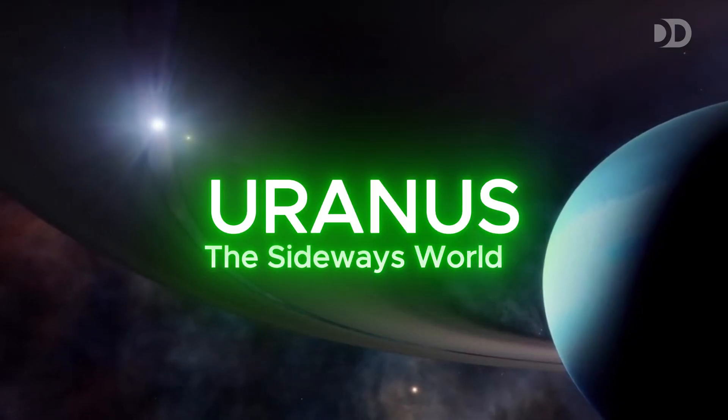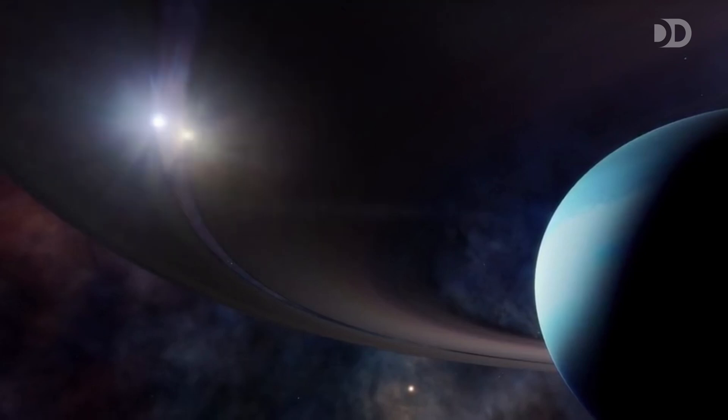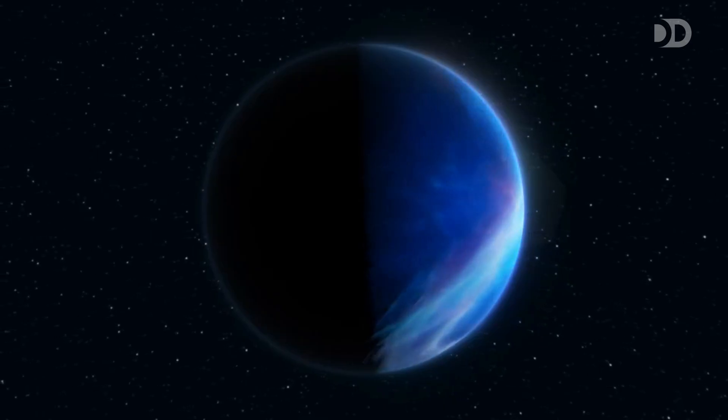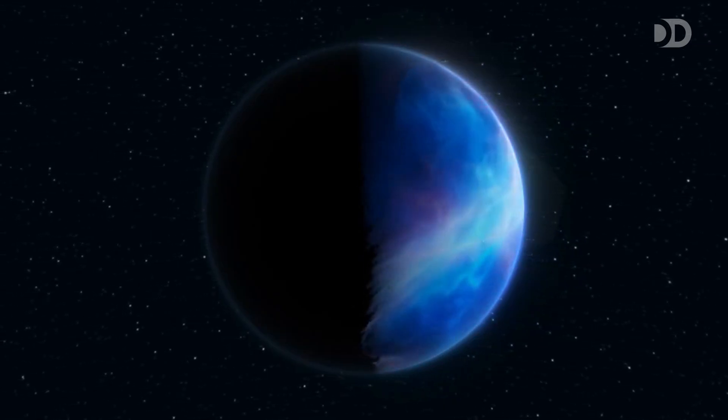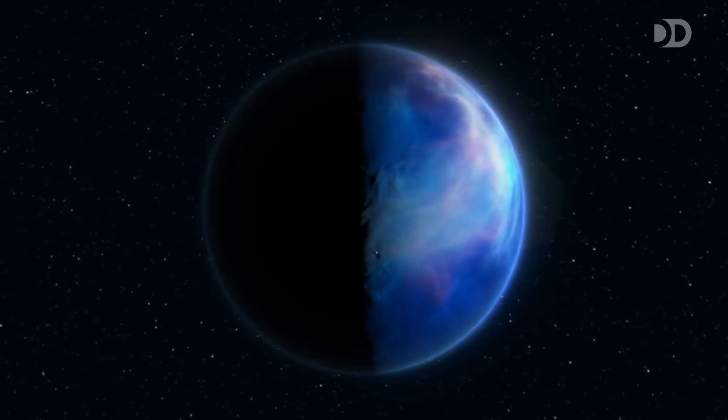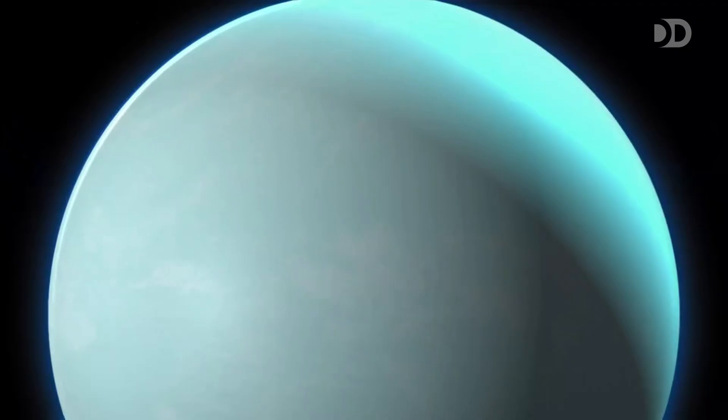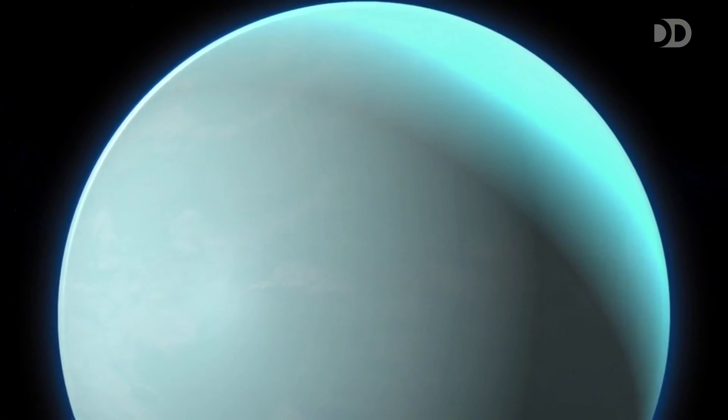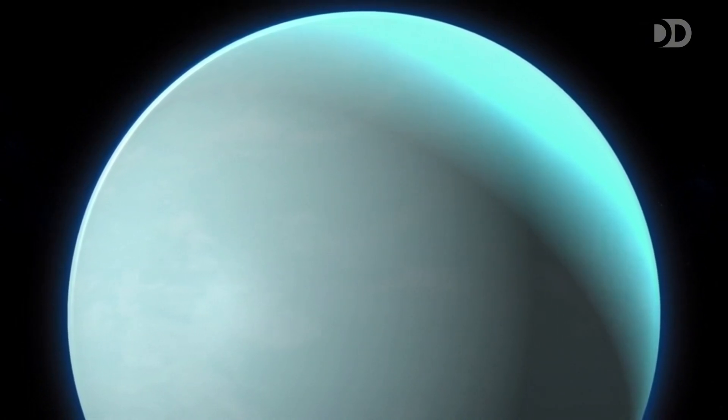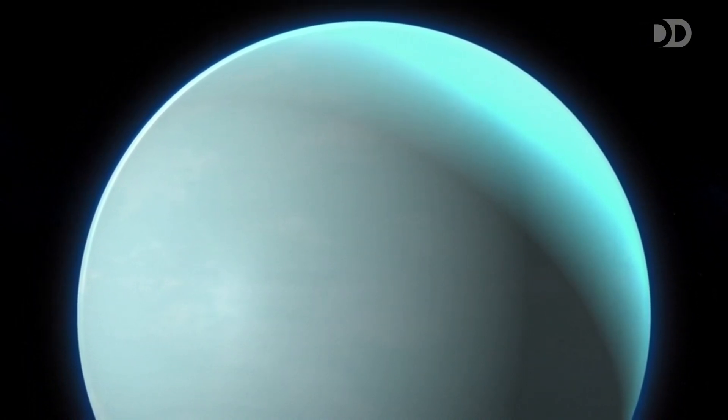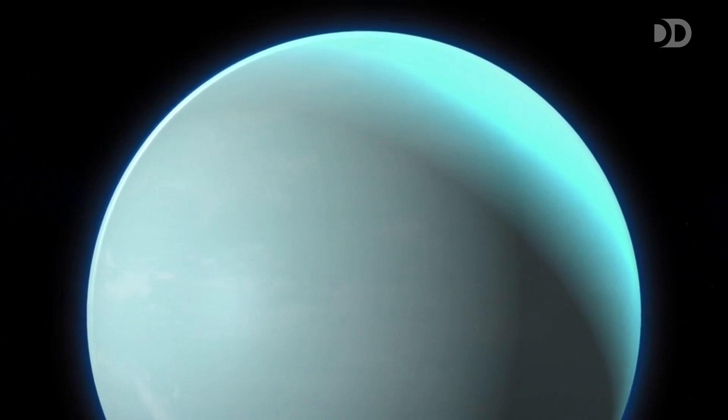Uranus, the ice giant, greets us with its unusual tilt, spinning almost on its side. This tilt causes extreme seasons, with decades of sunlight and darkness at each pole. Its blue-green color comes from methane in the atmosphere, reflecting blue and green light. Beneath the clouds, Uranus is a world of icy mysteries.